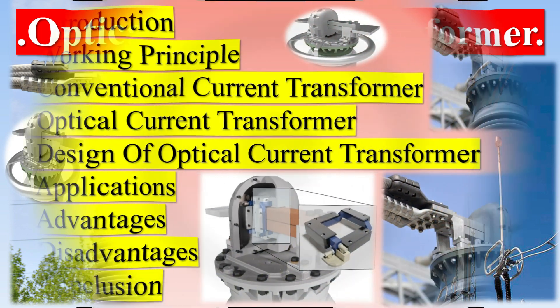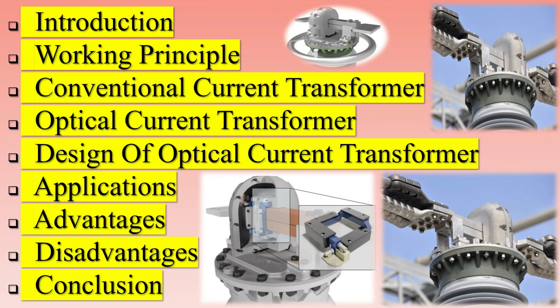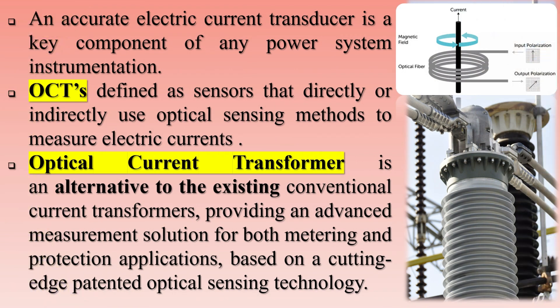An Optical Current Transformer (OCT) is a type of transformer used to measure current. It operates based on the principle of Faraday's law of electromagnetic induction, which produces a voltage proportional to the current in a conductor. The OCT consists of a coil of wire wrapped around a core of magnetic material. When current flows through the coil, it produces a magnetic field that induces a voltage in the core, which is then amplified and measured.